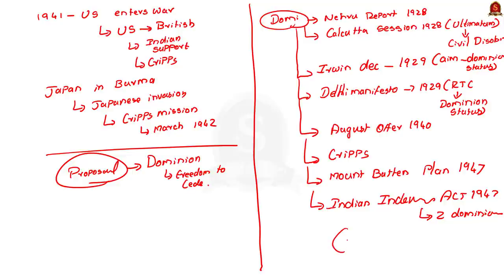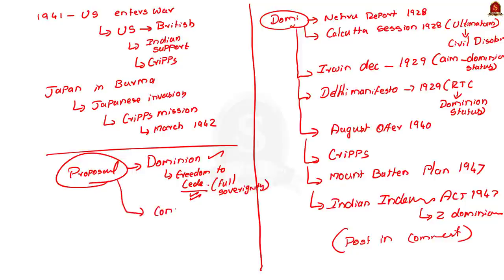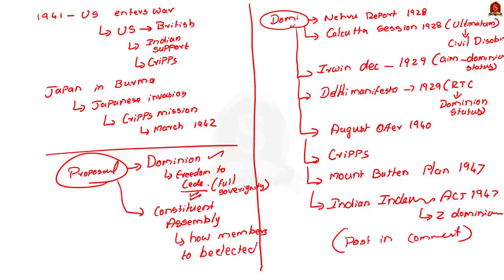The Cripps Mission also proposed that a Constituent Assembly would be formed to frame a new constitution for the country. This assembly would have members elected by provincial assemblies, and in the case of princely states, members would be nominated by the princes. This was the first time it was mentioned that Indians could form their own constitution. The mission also said that any province unwilling to join the Indian Union could form a separate union with a separate constitution — a provision that later became the model for the country's partition in 1947.